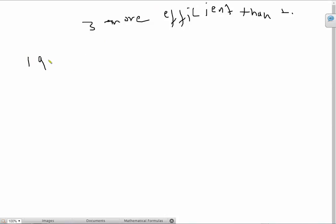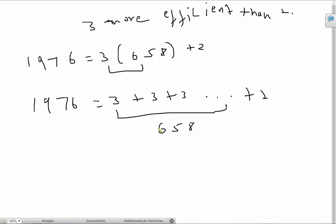So now we have 1976 equals 3 times 658 plus 2. We want to maximize this because that 2 can't be simplified anymore. If I write this as 1 plus 1 then the whole product goes down, but I have 3 times 658 so I can write 1926 as 3 plus 3 plus 3 till basically 658 times and then at the end I can add a 2. So this means that P max is going to be equal to 3 raised to 658 times 2, and this is our answer.